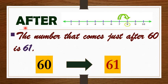What comes after? On this number line, we see the encircled number 8 comes just after 7. Another example for after: the number that comes just after 60 is 61.